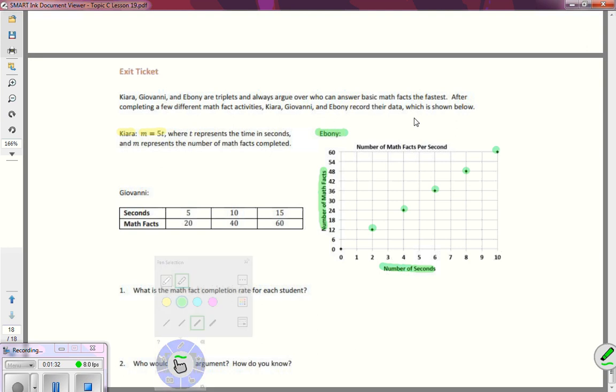And then we have Giovanni, who has taken her math facts and put them in a ratio table so that she has it separated by her seconds and her math facts.